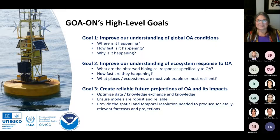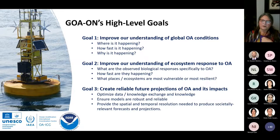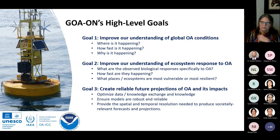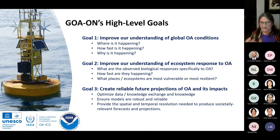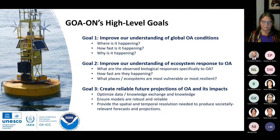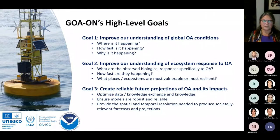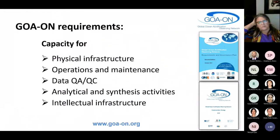GOON has three high-level goals: first, to improve understanding of global OA conditions — where is it happening, how fast, and why. Second, to improve understanding of ecosystem response — what are the biological responses, how fast, and which ecosystems are most vulnerable or resilient. Third, to facilitate better projections of OA and its impacts through exchanging data and knowledge, model projections, and connecting with societally relevant forecasts.